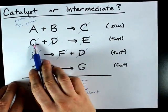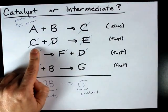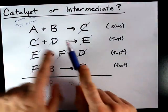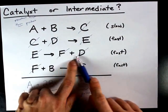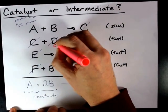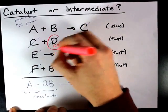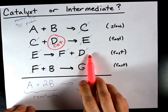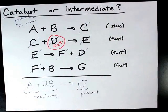D was used up in the second elementary step and then by the end of the third step, it was recreated. It was a product. D here is the catalyst because it is used up then regenerated as catalysts should be.